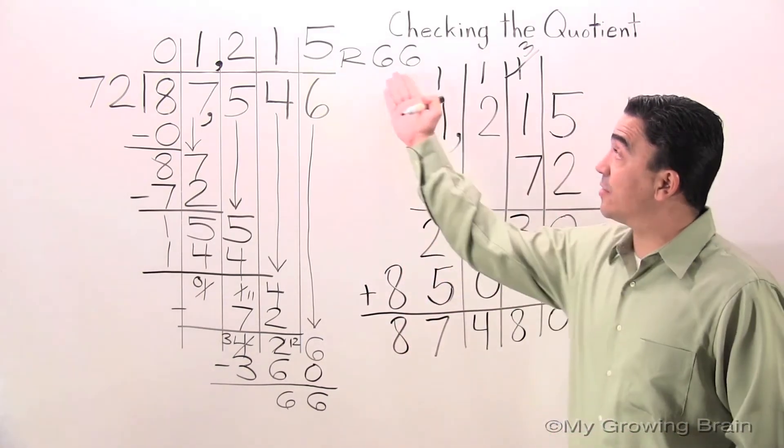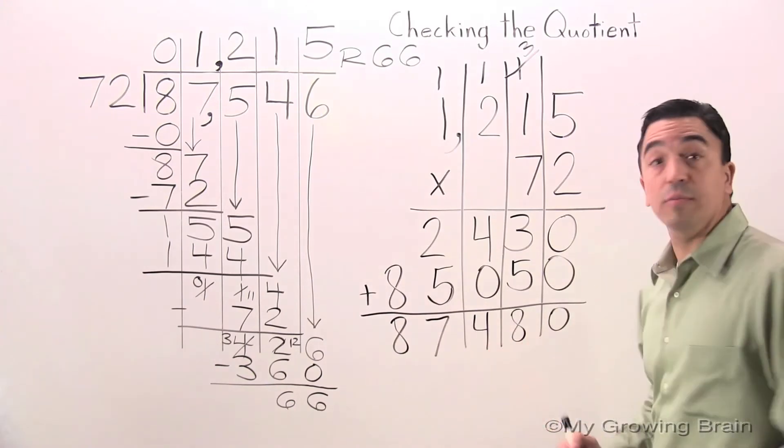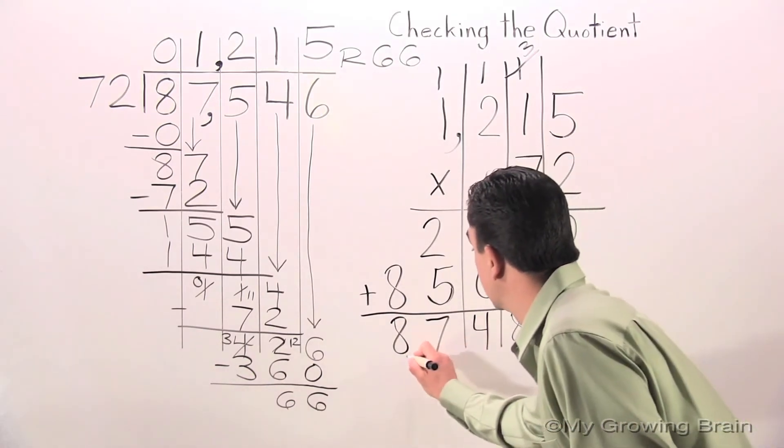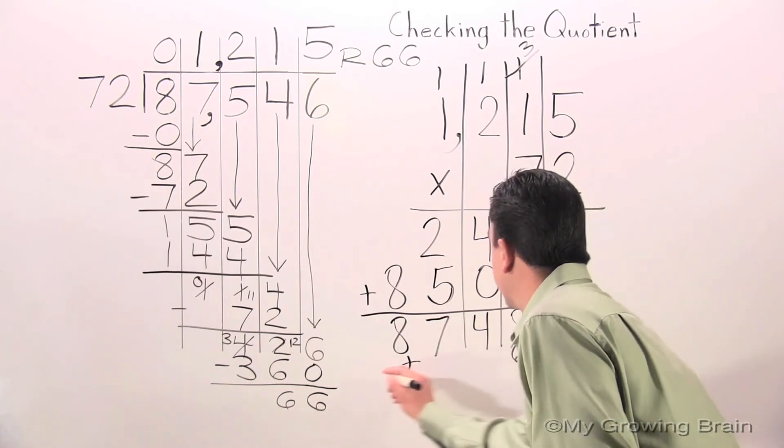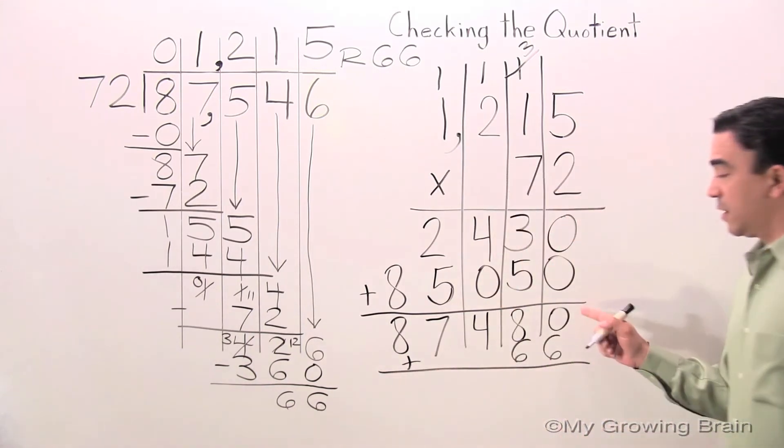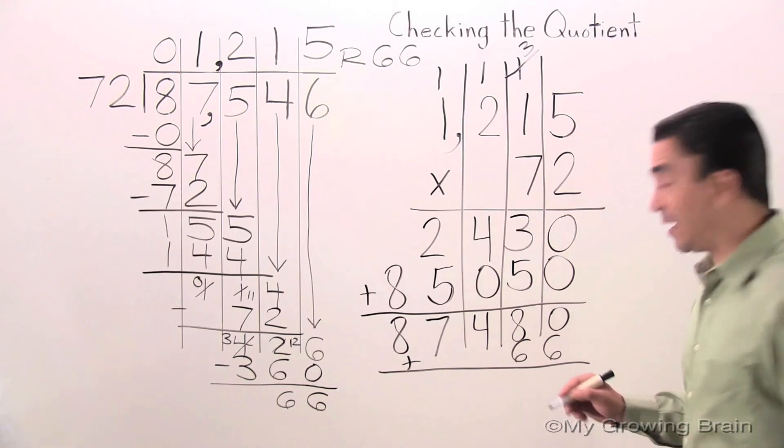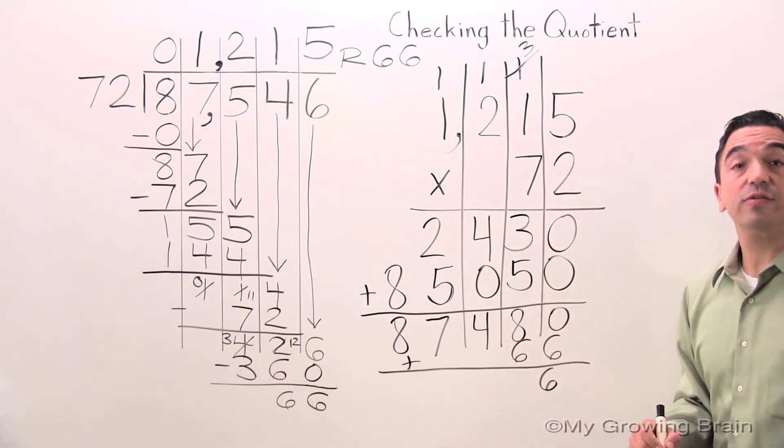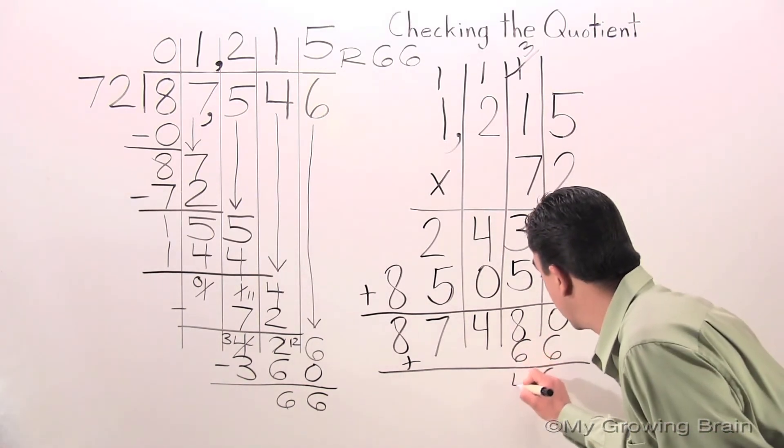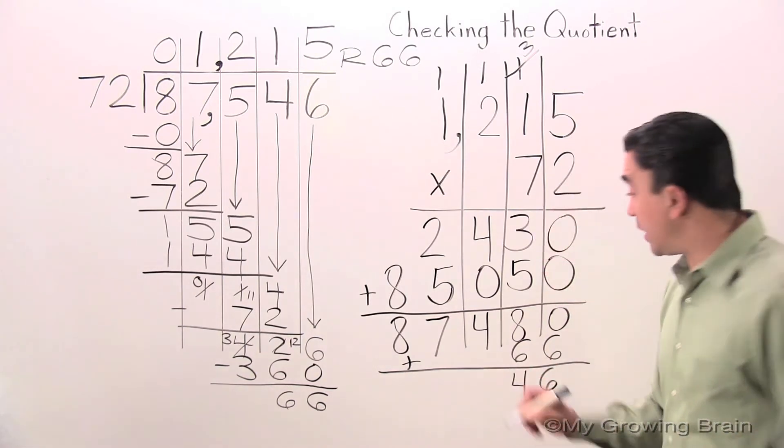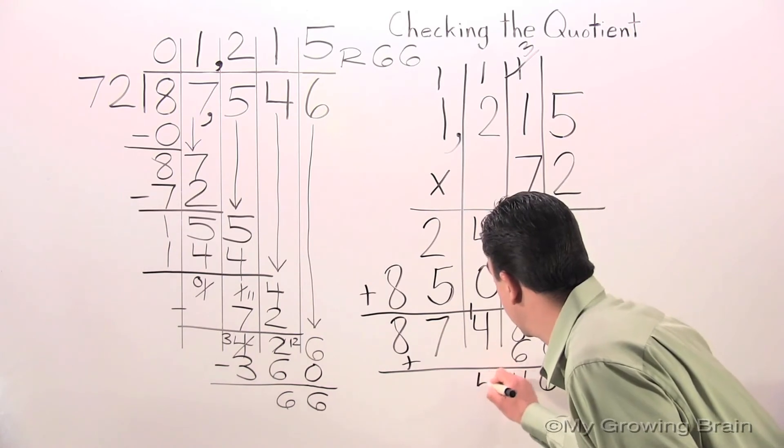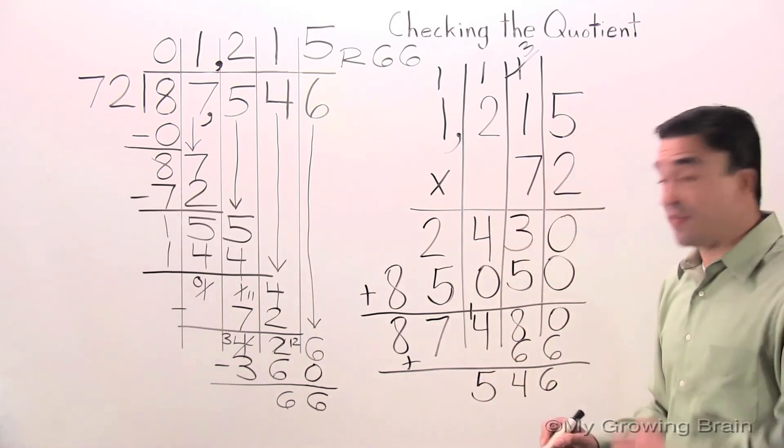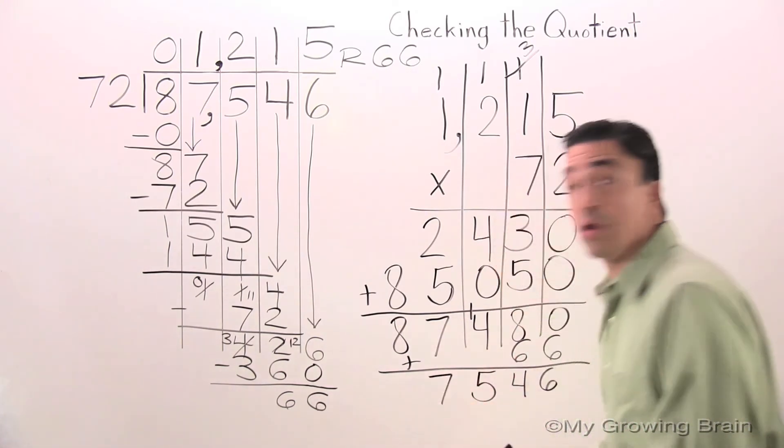Now I'm going to add the remainder to my answer. 6 plus 0, 6. 8 plus 6, 14. Regroup the 1. 4 plus 1, 5. Drop the 7. Drop the 8.